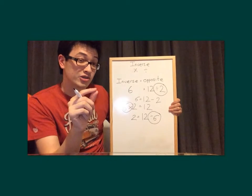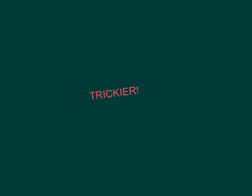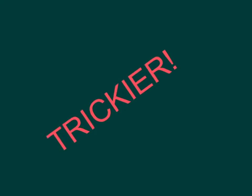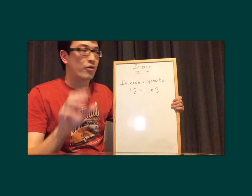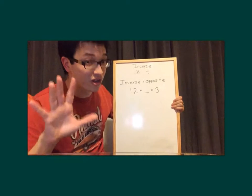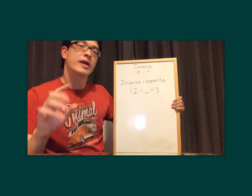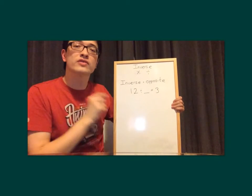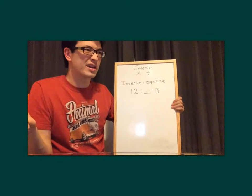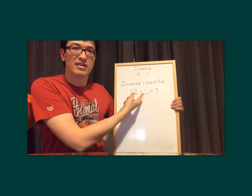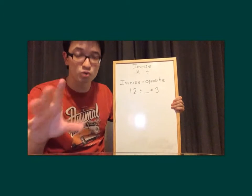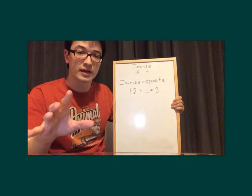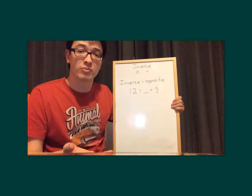Now let's try something a little bit trickier! We've got 12 divided by something equals 3. This is where inverse operations actually becomes super, super useful — in order to work out a missing number problem.